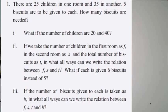In one room there are 25 children, and in another room there are 35 children. Adding them together: 25 plus 35 gives us 60 children in total.